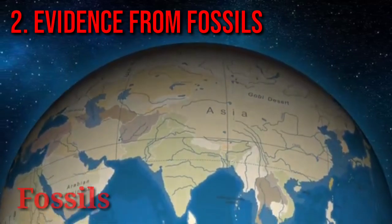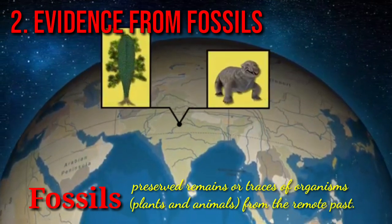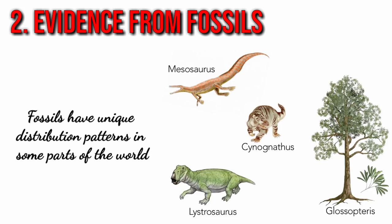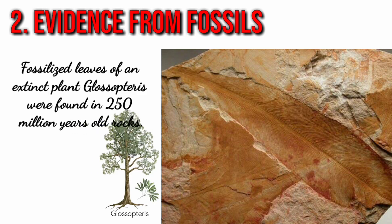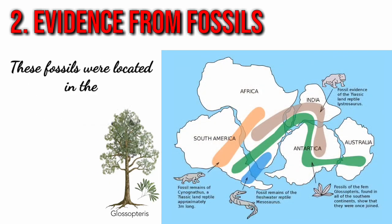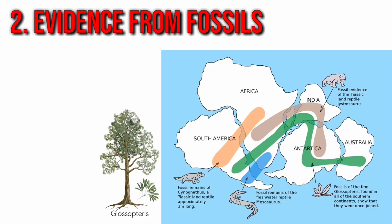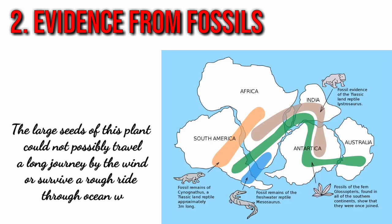Next is the evidence from fossils. Fossils are preserved remains or traces of organisms from the remote past. Fossils have unique distribution patterns in some parts of the world. Mesosaurus, Cynognathus, Lystrosaurus, and Glossopteris are the notable ones. Fossilized leaves of an extinct plant, Glossopteris, were found in 250-million-year-old rocks. These fossils were located in the continents of South Africa, Australia, India, and Antarctica, which are now separated from each other by wide oceans. The large seeds of this plant could not possibly travel a long journey by wind or survive a rough ride through ocean waves.